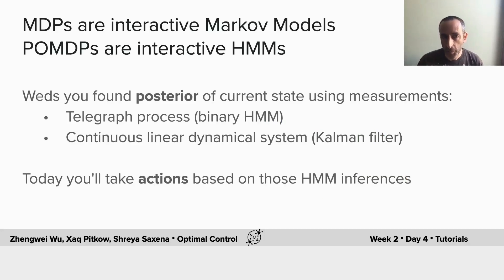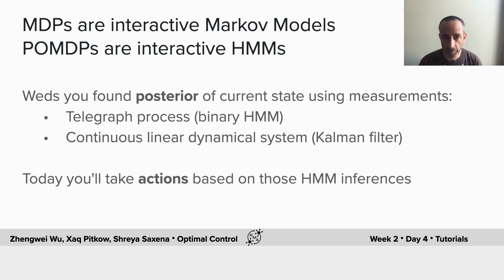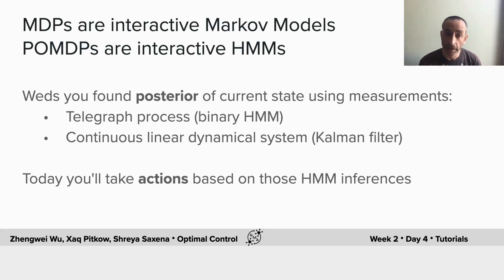MDPs — Markov decision processes — are really interactive Markov models, which you covered on Tuesday. POMDPs are interactive hidden Markov models. On Wednesday, you found the posterior of current states using the measurements, and we used two running examples: the telegraph process, which is a binary HMM, and the continuous process, which we use the Kalman filter for. Today, you will take actions based on those HMM inferences.